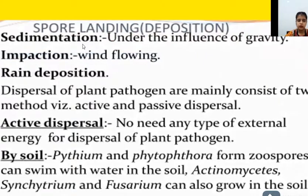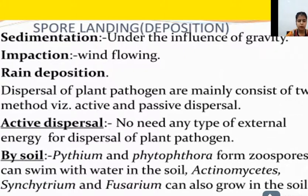Next is spore landing and deposition. The mechanisms are sedimentation, impaction, and rain deposition. In sedimentation, gravity influences spores to settle down in a particular place. In impaction, wind carries and impacts spores. In rain deposition, pathogens are deposited via rain. Dispersal is of two types: active dispersal and passive dispersal.